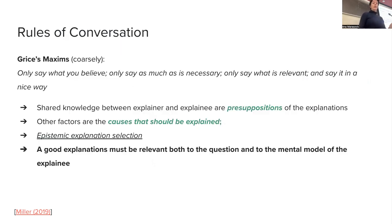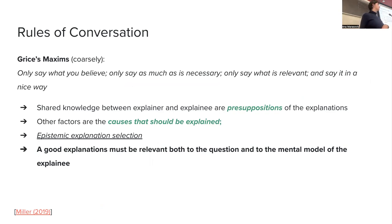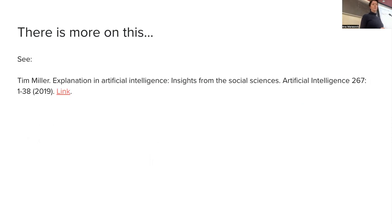A good explanation must be relevant both to the question — of course, if we are asking why something happened, it needs to be tailored to that — but also to the mental model of the explainee. That is the point Miller is making.